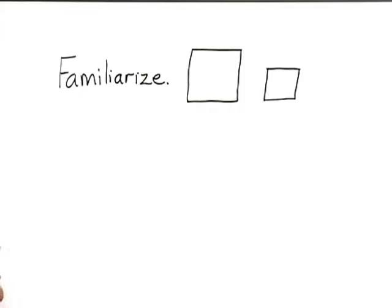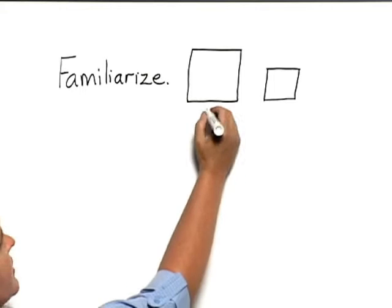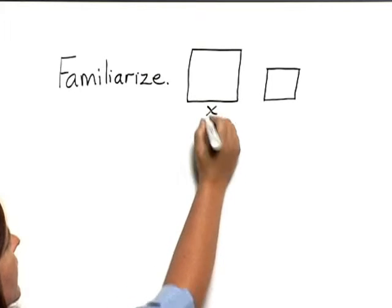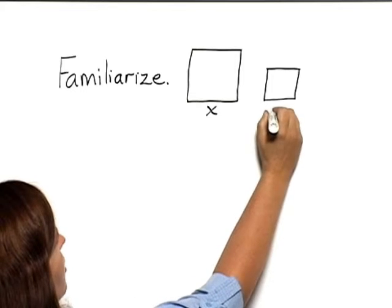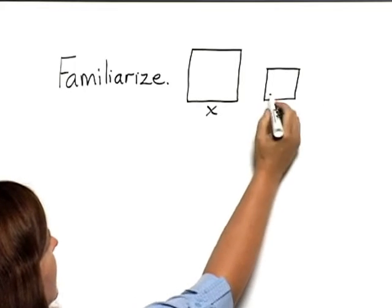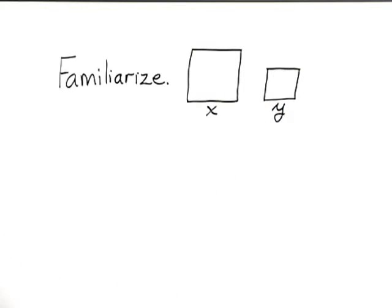We have two squares, and let's label the side of the larger square x, and the side of the smaller square y. All of these sides will be the same in each square because the sides of a square are the same.